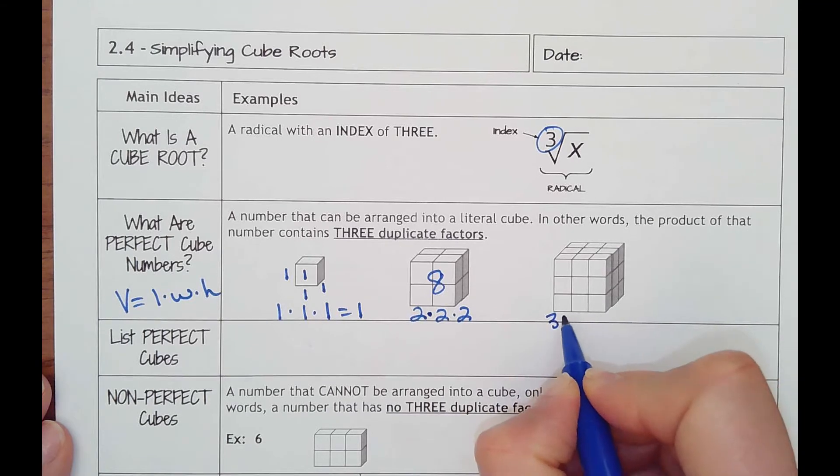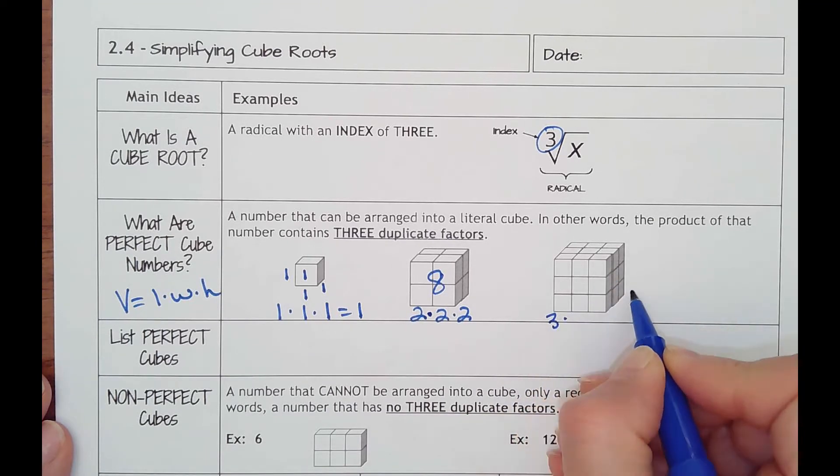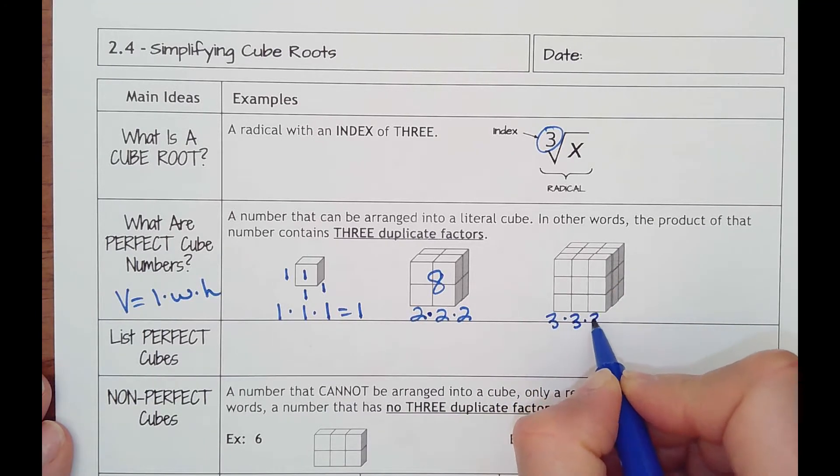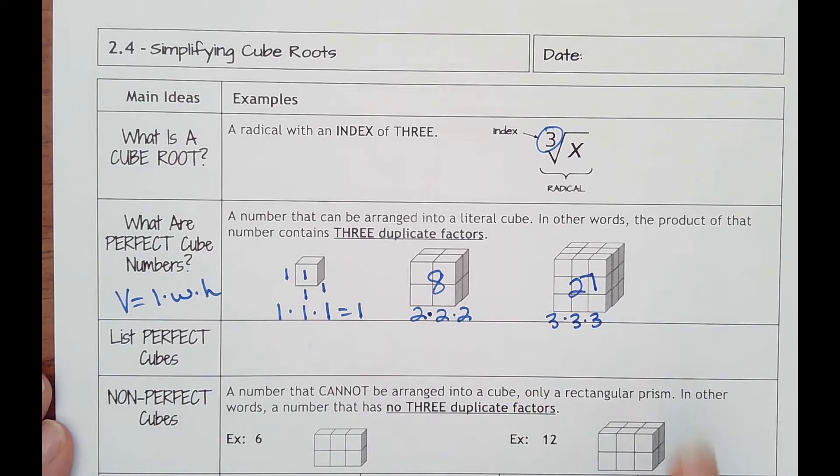And then if we increase and have three, three by three by three, three times three is nine times three is 27. So hopefully that gives you some kind of visual.